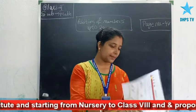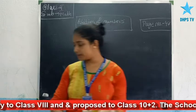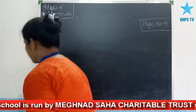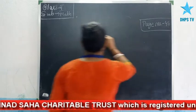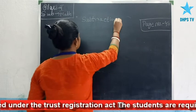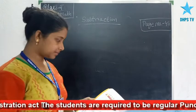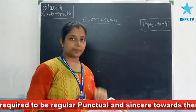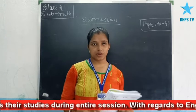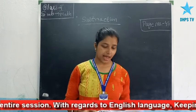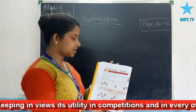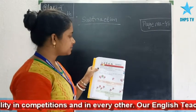Now turn the page to page number 48. The chapter is subtraction. In your previous chapter you have learnt about addition — addition means all together. Subtraction means take away. You can see in page number 48 the basic concept: subtraction means to take away.